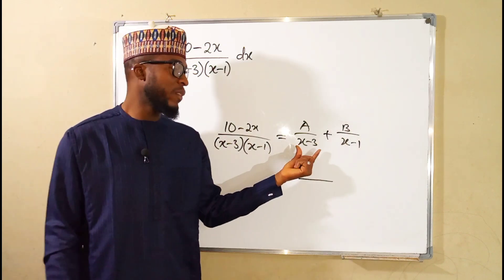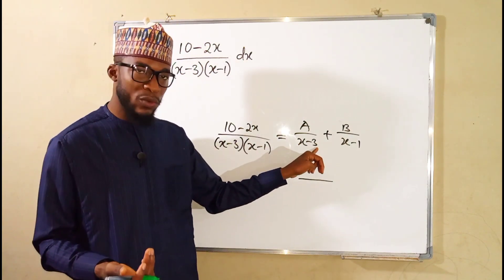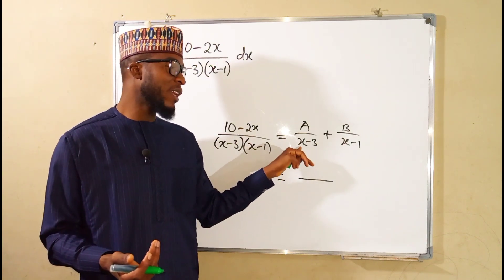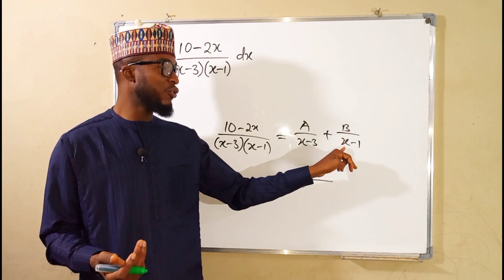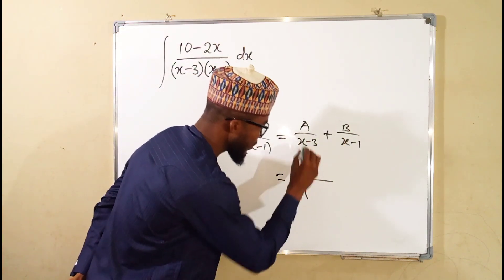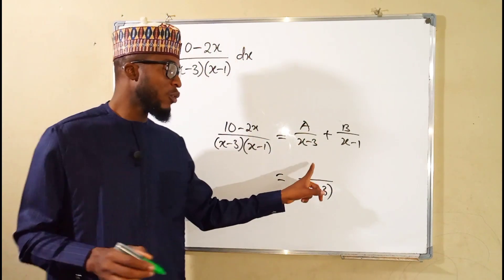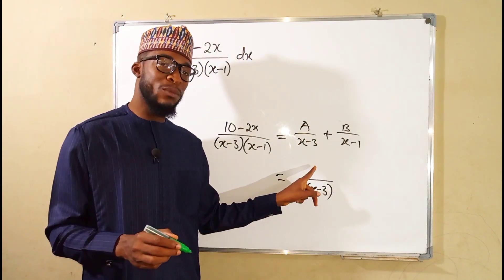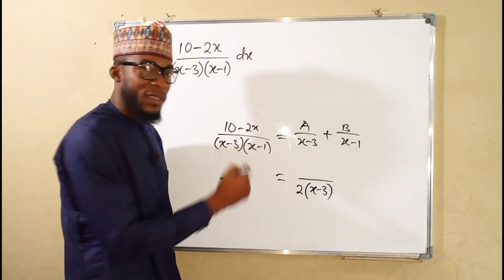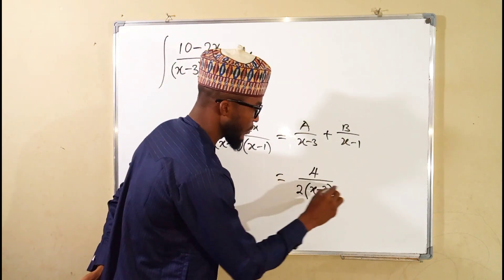We are going to use the cover-up method. To transform the factor (x minus 3) into zero, x must equal 3. Substituting into the other factor: 3 minus 1 is 2, so we have 2 times (x minus 3). To find the corresponding numerator, substitute x equals 3: 2 times 3 is 6, and 10 minus 6 is 4, so the numerator is 4.